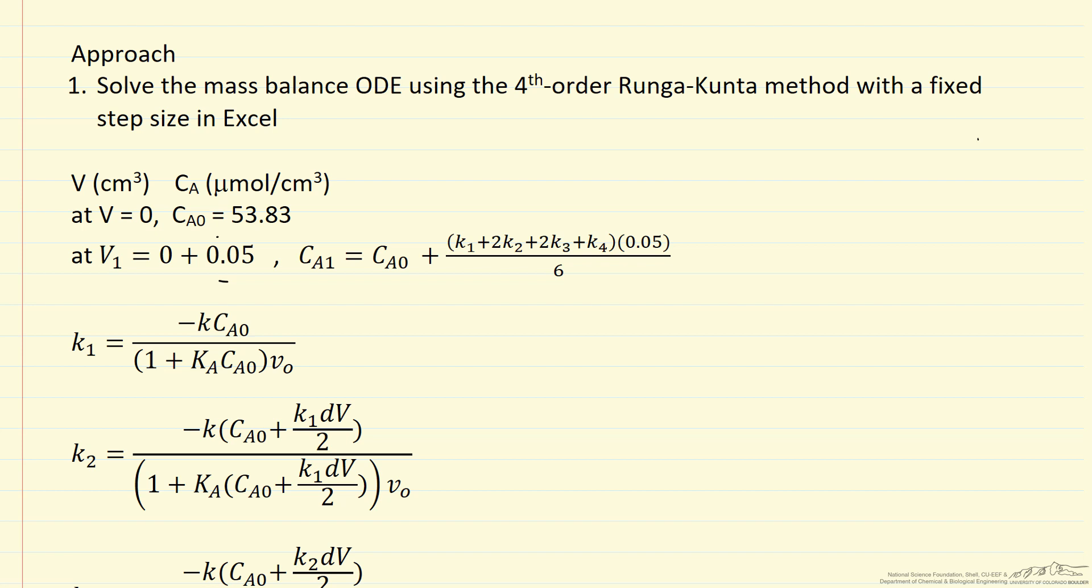So we're going to fix the reactor volume but use V as our independent variable. At the reactor inlet, we say volume is zero and the feed concentration is for a pressure of 2 bar and a temperature of 450 Kelvin. The way we're going to do this numerical integration is by stepping through. At a small distance down, 0.05 cubic centimeters, the concentration at that location is our feed concentration.